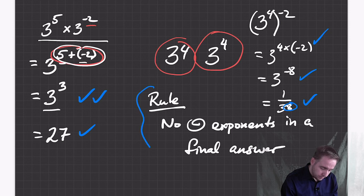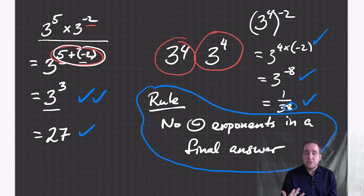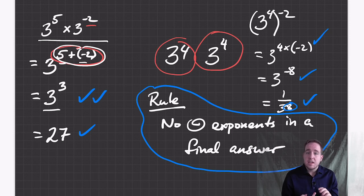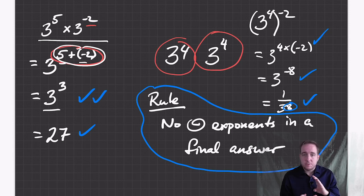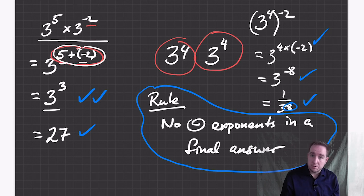This rule now gets added to your list forever. Things like: if it's a word problem, your answer has a sentence at the end. If it's a measurement problem, your answer has units. If your answer is a fraction, reduce to lowest terms. And now, if your answer has a negative exponent, flip appropriately so there are no negative exponents when you're done.